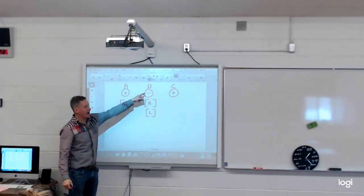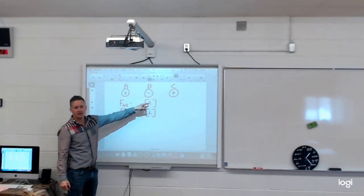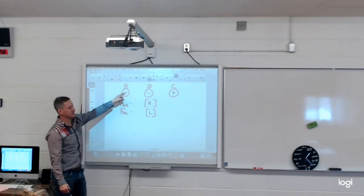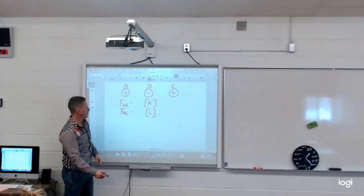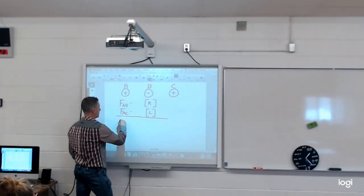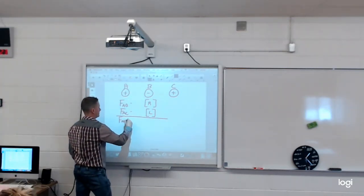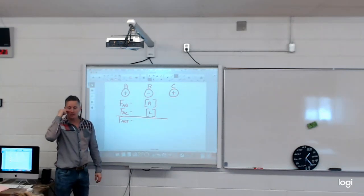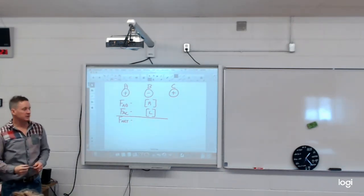Because it's attracted to B, it's going to go to the right. Because it's opposing C, it's going to go to the left. So when you actually find out the net force, you subtract the two.